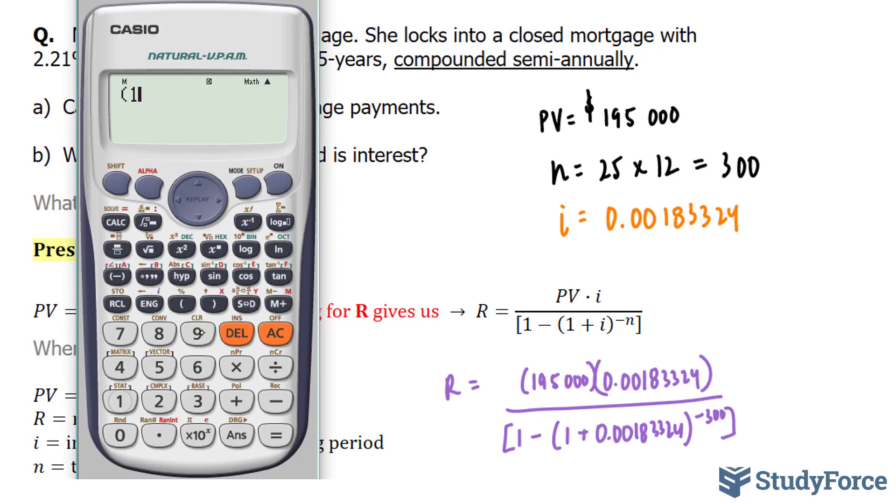I'm going to plug this all into my calculator, starting with the numerator. 195,000 times 0.001, and we can use answer because that was the last entry, divided by 1 minus bracket 1 plus this number, to the power of negative 300. And if you've done this successfully, you should get $845.62.